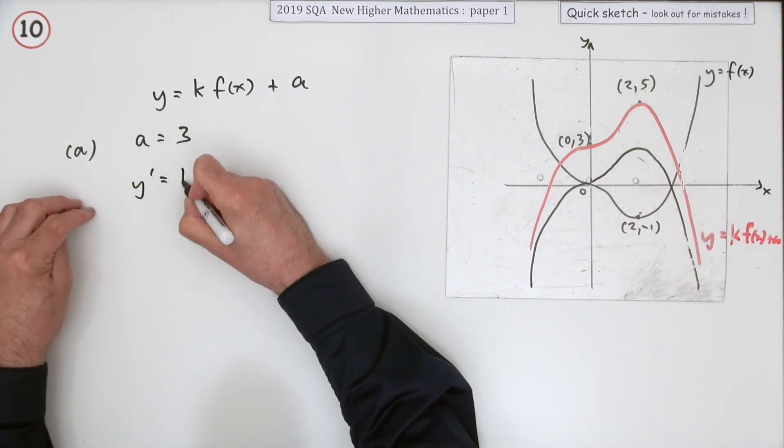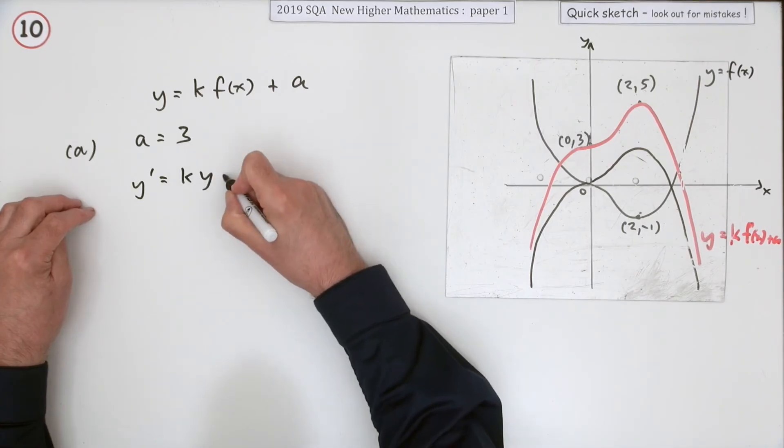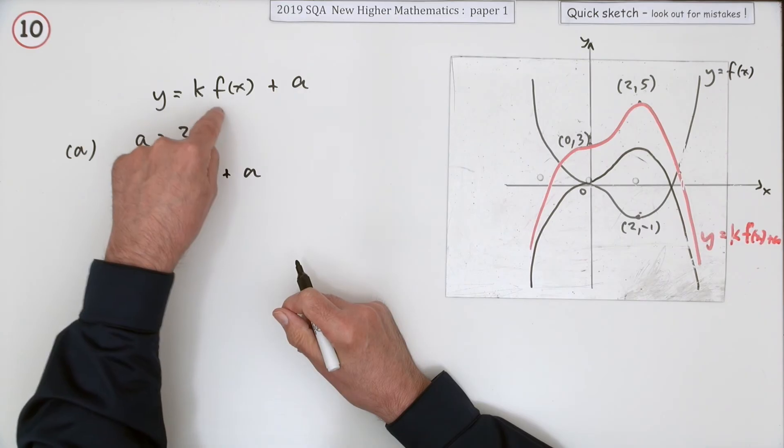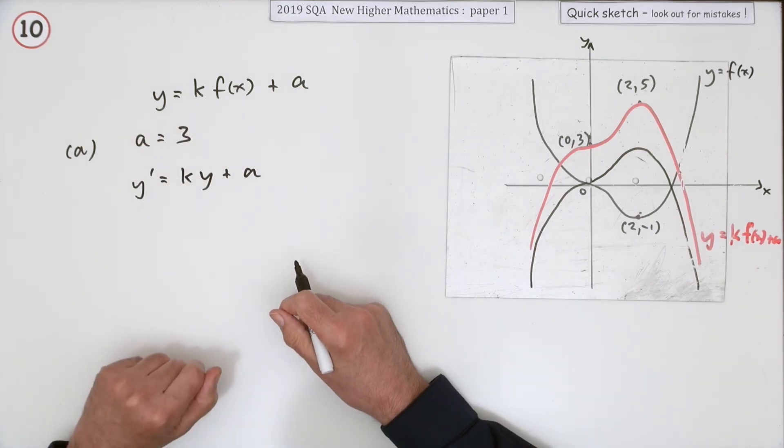The new y-coordinate must be k times the old y-coordinate plus a. That's the way this works. f of x are the old y-coordinates.